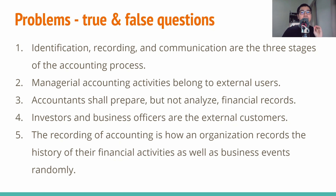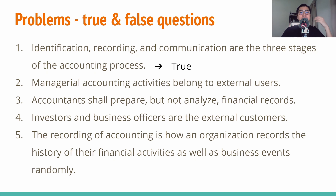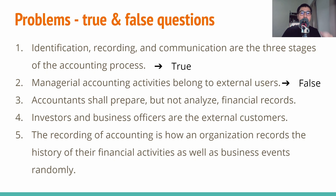This is a revision section. The first question: identification, recording, and communication are the three stages of the accounting process — true or false? The answer is true, because accounting means how we do the number, and we can extend that to: the company has to identify, record, and communicate the number as well as the economic events. The second question: managerial accounting activities belong to external users — true or false? The answer is false, because managerial accounting belongs to internal users.